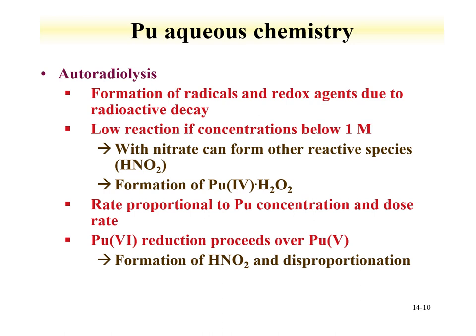Autoradiolysis must also be considered: because plutonium is radioactive, it forms radicals and redox agents due to radioactive decay. These reactions tend to be low if concentrations are below 1 molar. In a nitrate medium, you can form nitrous acid. You can also form peroxide species, as discussed with other actinides. Autoradiolysis-driven changes in redox are rate-proportional to plutonium concentration and dose rate, which also relates to the half-life of the plutonium isotope in solution.